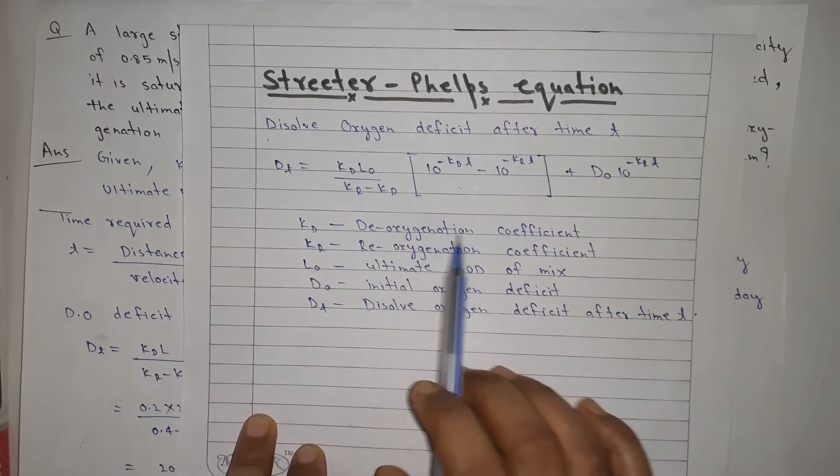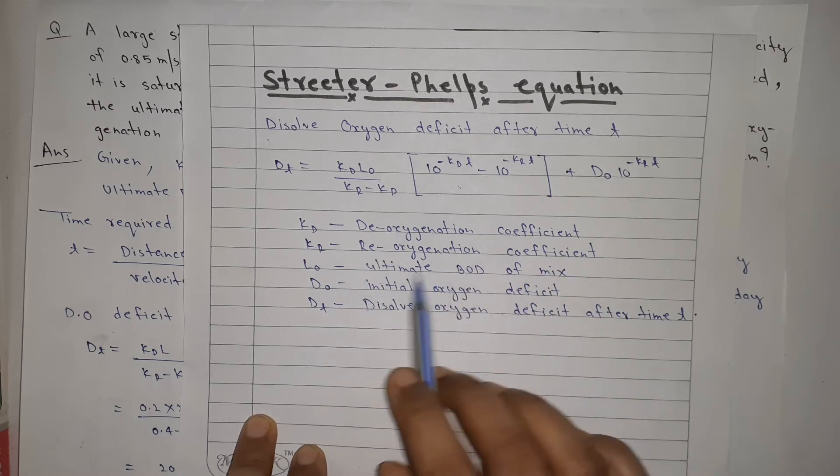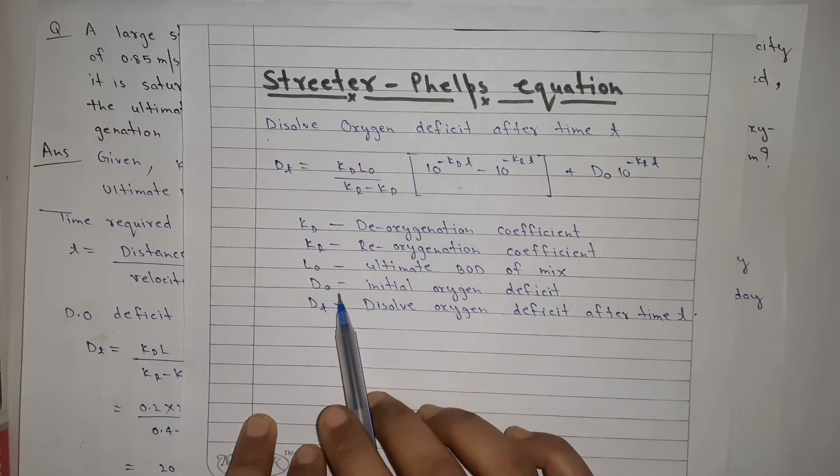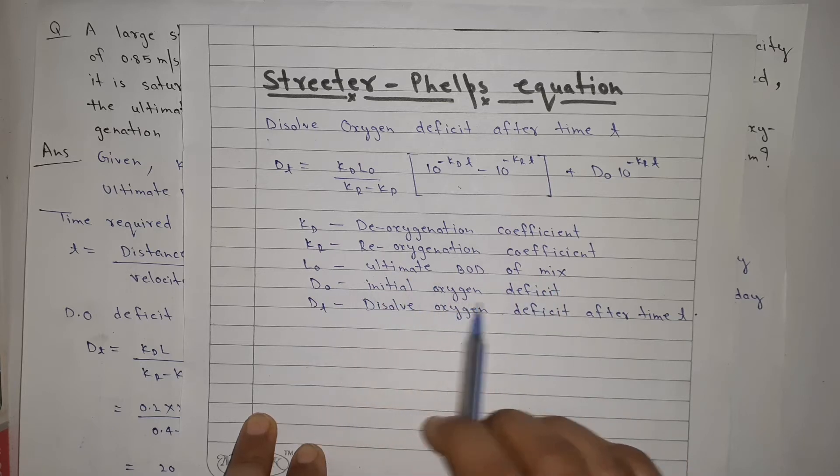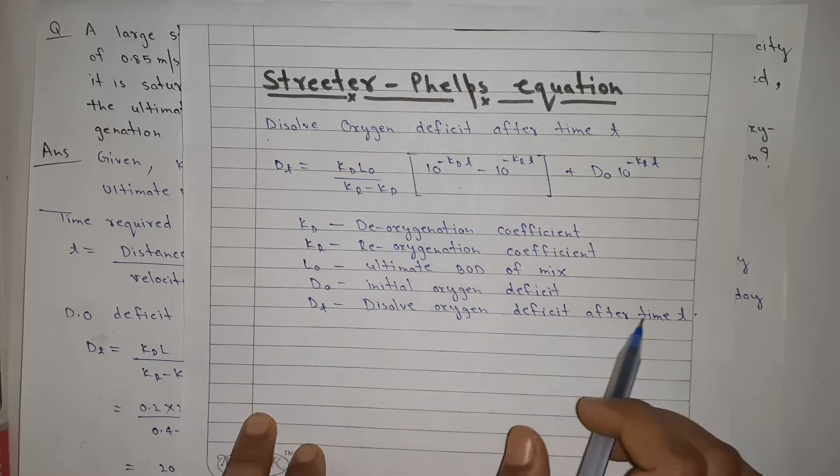Kd is Deoxygenation Coefficient, Kr is Reoxygenation Coefficient, L0 is Ultimate BOD of mix, D0 is Initial Oxygen Deficit, and DT is Dissolved Oxygen Deficit After Time T.